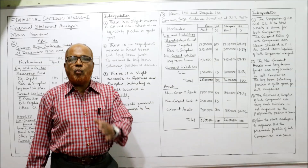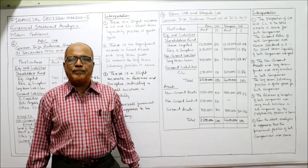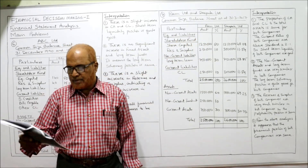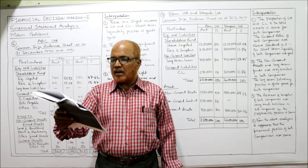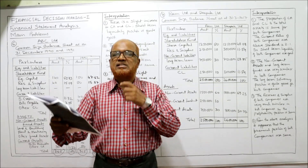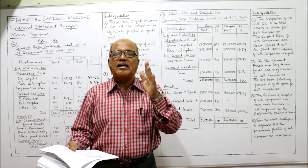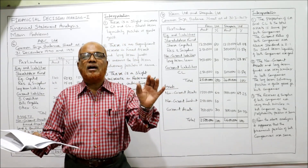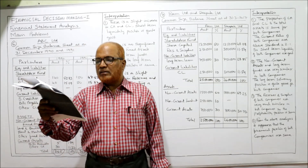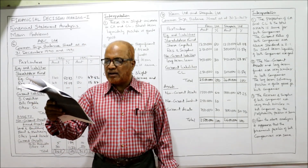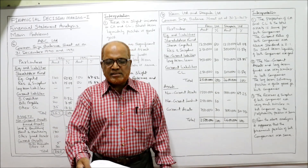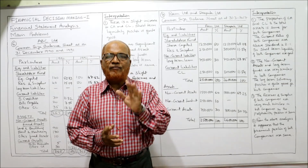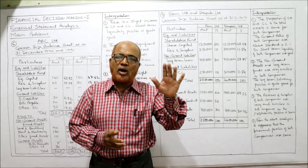In the seventh problem we are making inter-firm comparison — one company compared with another company. The two companies are Ram Limited and Deepak Limited. Particulars include equity share capital and reserves and surplus under shareholders' fund, long-term loan under non-current liabilities, then current liabilities, non-current assets, non-current investments, and current assets.